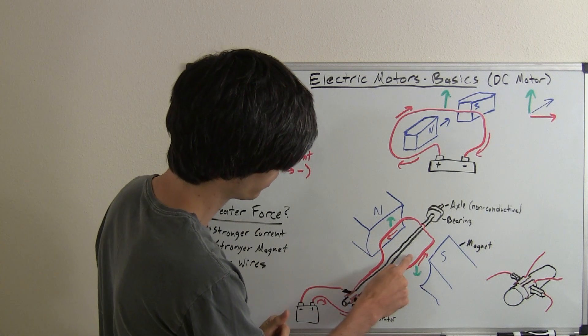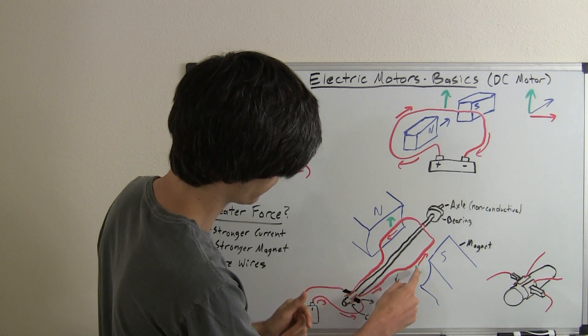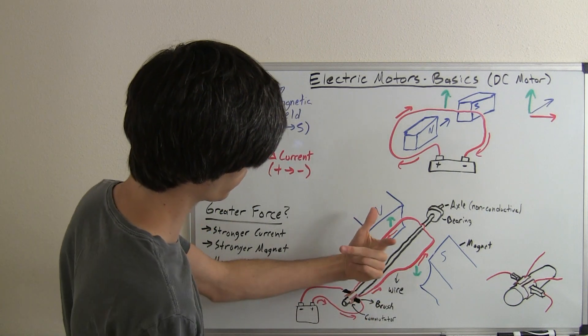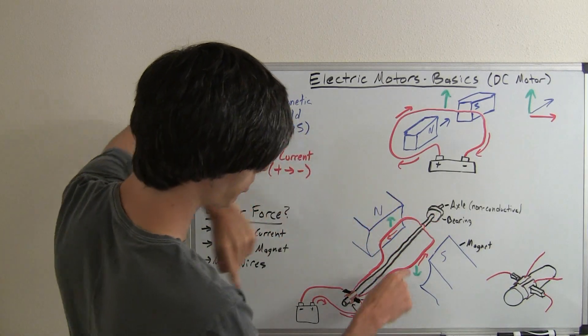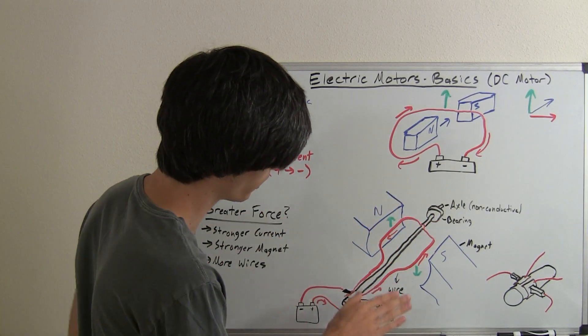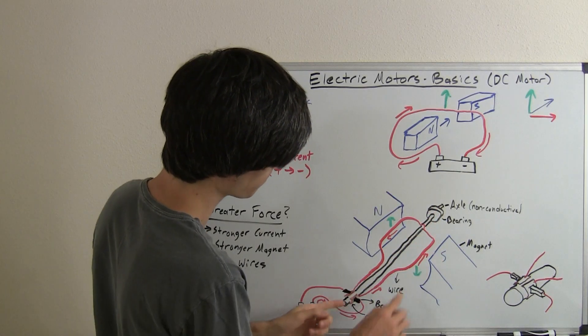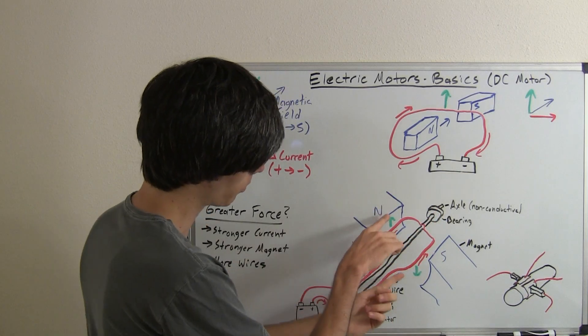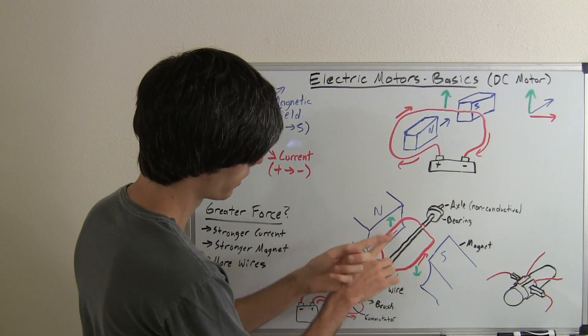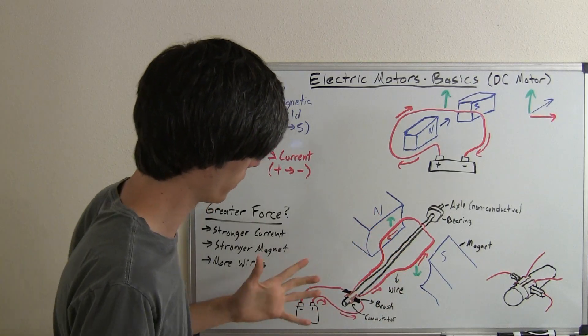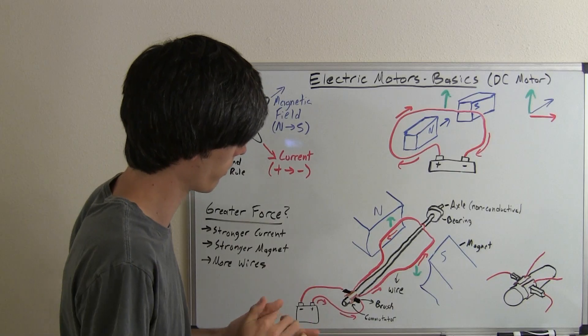Now on the other side of this, we've got the current flowing in the opposite direction. So instead of the force going up, the force is going to push that side of the wire down. So what you've got here is this rotating axle, which is on a bearing, and so this is going to start to push it around and rotate this axle, hence creating a motor. You've got a revolution going on.